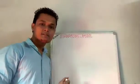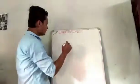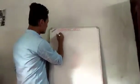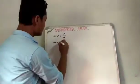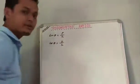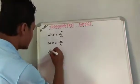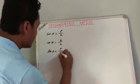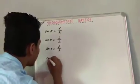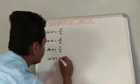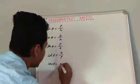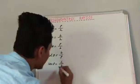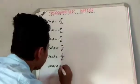So now let's write the relations among them. We know sin θ equals perpendicular by hypotenuse, cos θ equals base by hypotenuse, tan θ equals perpendicular by base, cot θ equals base by perpendicular, sec θ equals hypotenuse by base, and cosec θ equals hypotenuse by perpendicular.